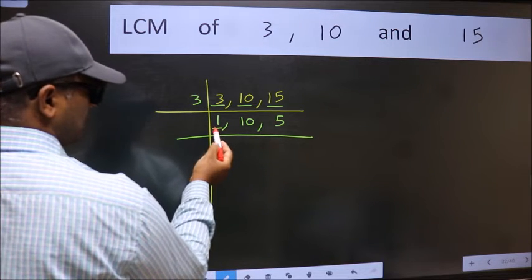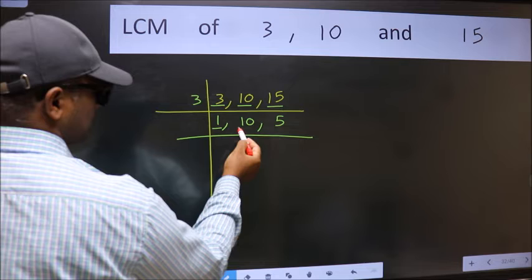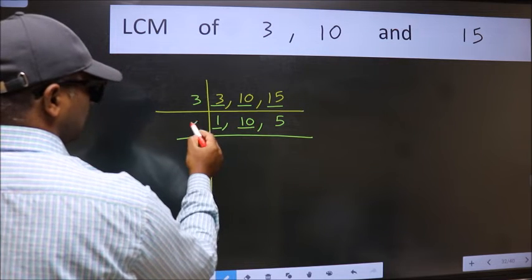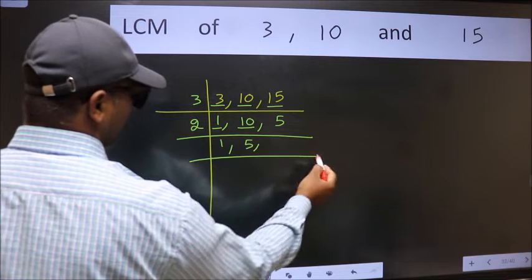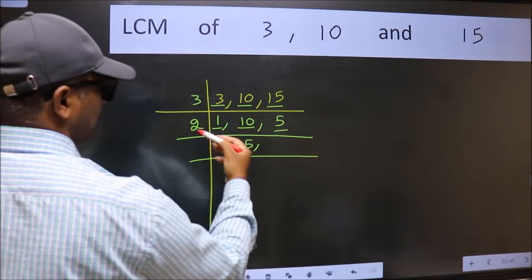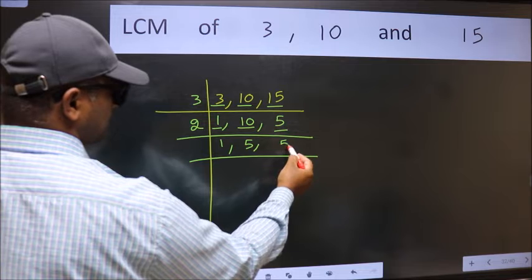Now we got 1 here so focus on the next number 10. 10 is 2 times 5 is 10. The other number 5 is not divisible by 2 so we write it down as it is.